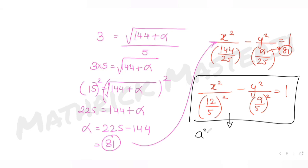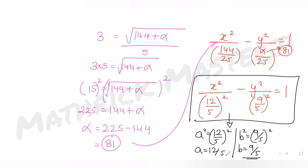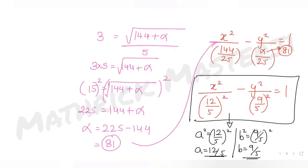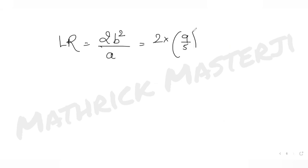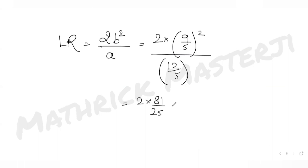This gives a = 12/5 and b = 9/5. The length of the latus rectum of the hyperbola is 2b²/a = 2 × (9/5)² / (12/5) = 2 × (81/25) × (5/12) = 2 × 81/(25 × 12/5) = 162/25 × 5/12 = 27/10.